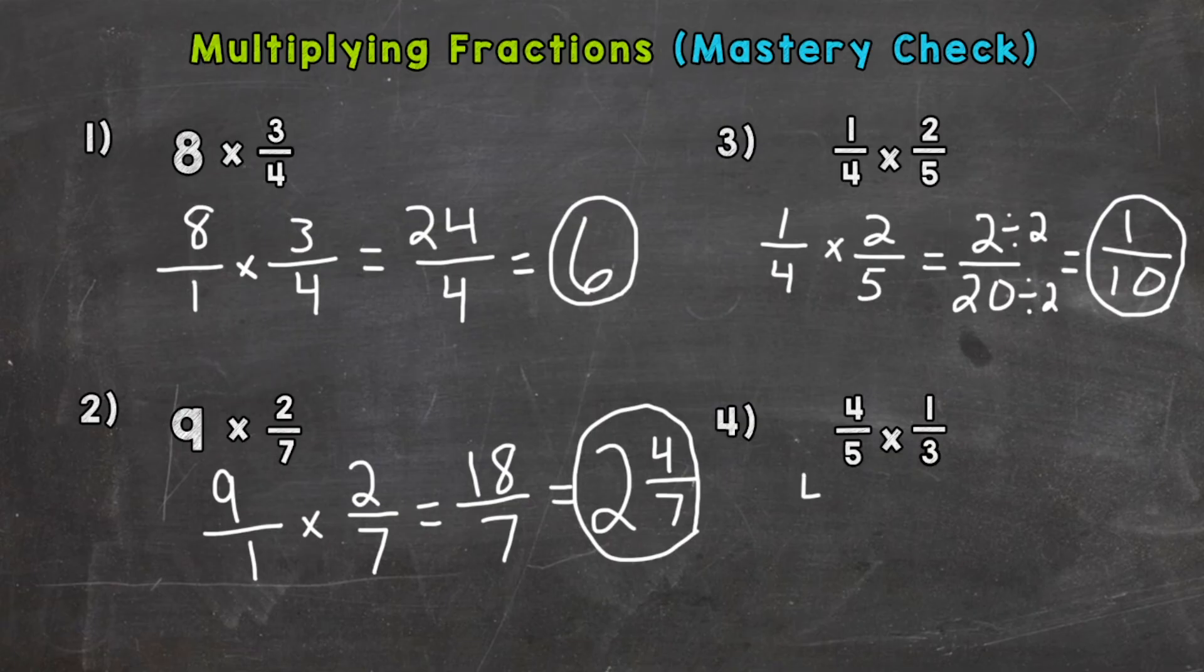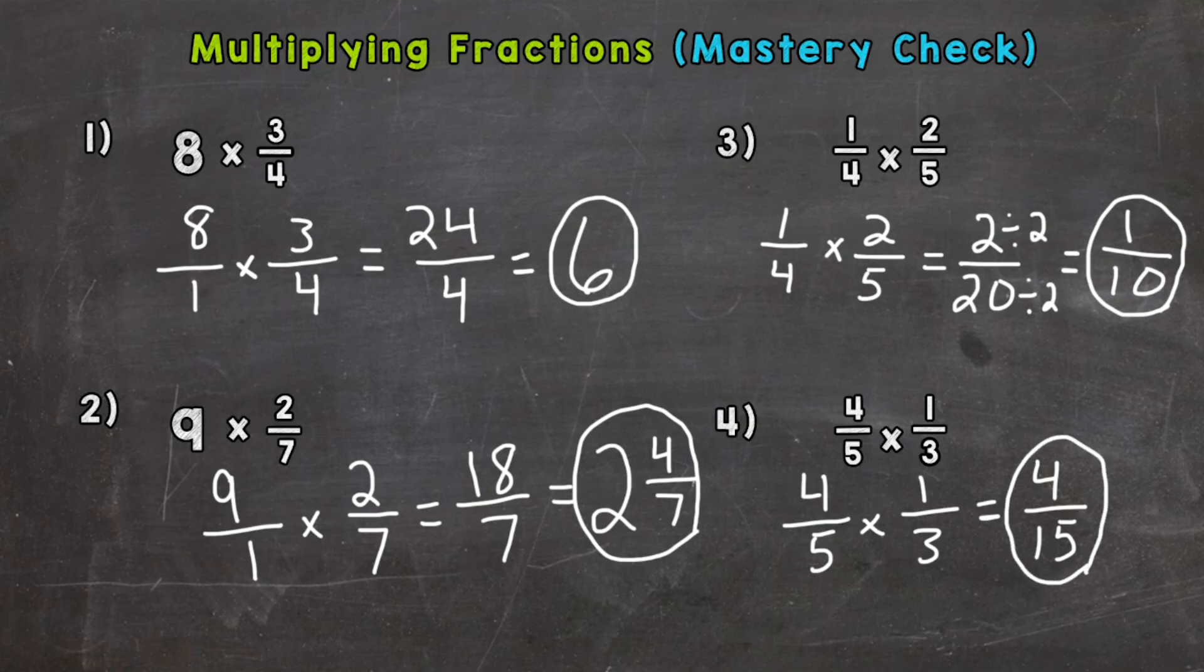Number 4, 4/5 times 1/3. Straight across, 4 times 1 is 4, 5 times 3 is 15. Now the only common factor between 4 and 15 is 1. So that means that fraction is already simplified. We are done. 4/15. So there you have it.